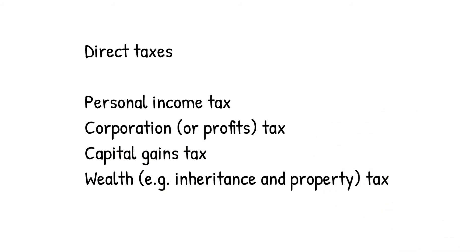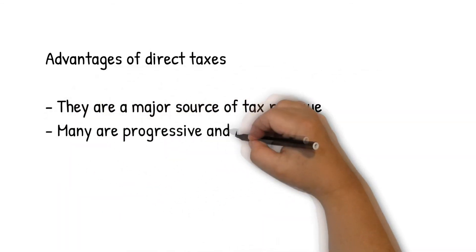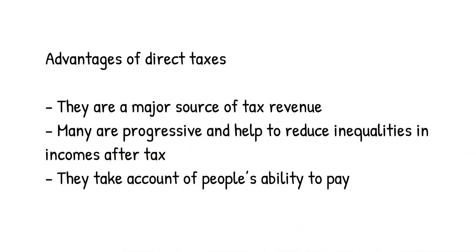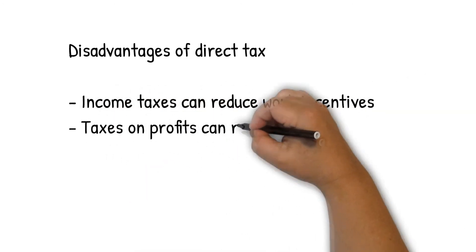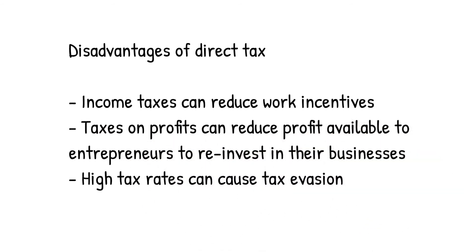Types of direct taxes include: personal income tax, corporation or profits tax, capital gains tax, and wealth taxes such as inheritance and property tax. The advantages of direct taxes are: they are a major source of tax revenue, many are progressive and help reduce inequalities in incomes after tax, and they take account of people's ability to pay. The disadvantages are: income taxes can reduce work incentives, taxes on profits can reduce profit available to entrepreneurs to reinvest, and high tax rates can cause tax evasion.